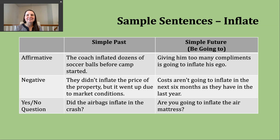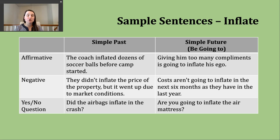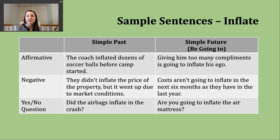Now let's look at the simple future using be going to, which is common for plans and sometimes predictions. The form of be changes based on the subject: am with I, are with you/we/they, and is with he/she/it. Then it's the same: form of be + going to + base verb. Example: giving him too many compliments is going to inflate his ego — a prediction that if we keep praising someone, their sense of self will expand.